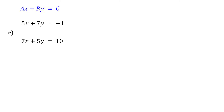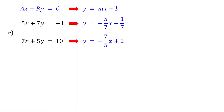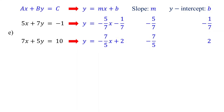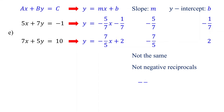Both equations are in standard form, so first convert them to slope-intercept form. Then identify the slopes and y-intercepts. Now ask yourself: are these lines parallel? The slopes are not the same, so they cannot be parallel. Then ask yourself: are they perpendicular? The slopes are not negative reciprocals, so they cannot be perpendicular. Be careful — although these slopes are reciprocals, they have the same sign, so they cannot be perpendicular.